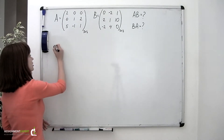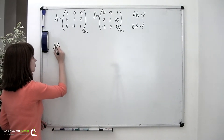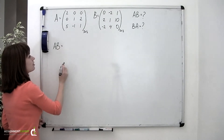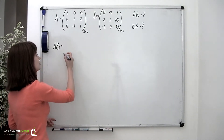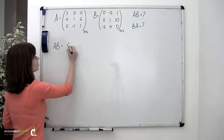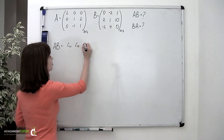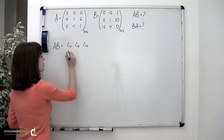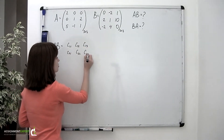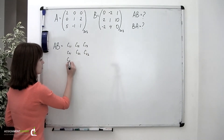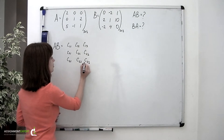So let's start with the AB product, which will be a matrix of size 3 by 3 as well, formed by the elements C sub 1,1; C sub 1,2; C sub 1,3; C sub 2,1; C sub 2,2; C sub 2,3; C sub 3,1; C sub 3,2; C sub 3,3.